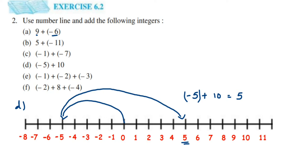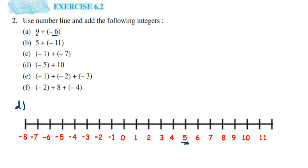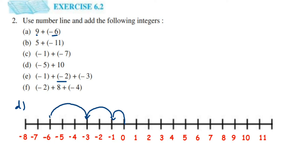The fifth question has three integers: minus 1 plus minus 2 plus minus 3. Starting from 0, minus 1 is one step to the left — reaching minus 1. Then plus minus 2 is negative, so two more steps to the left — reaching minus 3. Then plus minus 3 means three more steps to the left, counting 1, 2, 3 — we reach minus 6. So minus 1 plus minus 2 plus minus 3 is equal to minus 6.